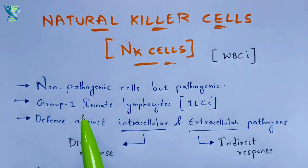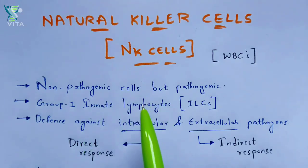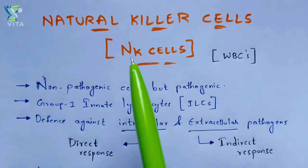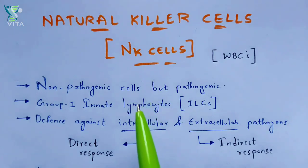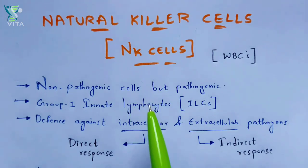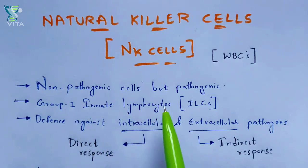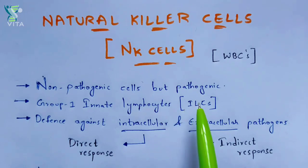NK cells are considered as group 1 innate lymphocytes. They are considered as such because they can perform the defense mechanism very quickly — meaning these NK cells can recognize pathogens entering from the external environment very rapidly. Hence they are classified as group 1 innate lymphocytes, also called innate lymphoid cells.